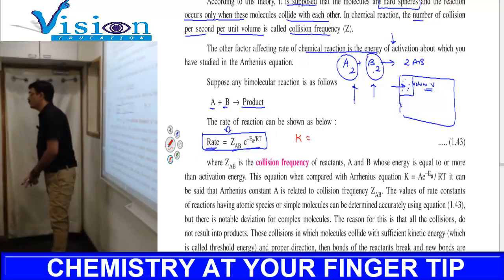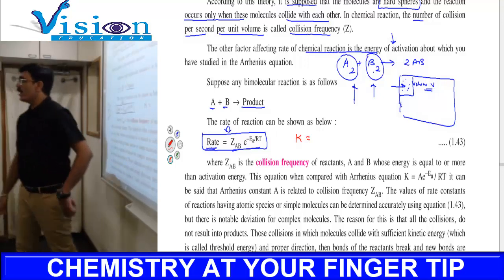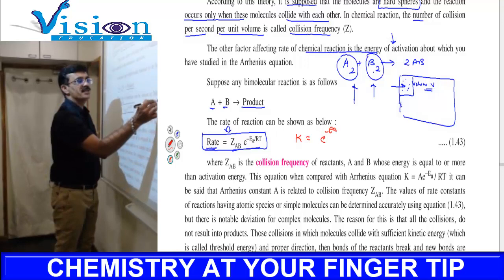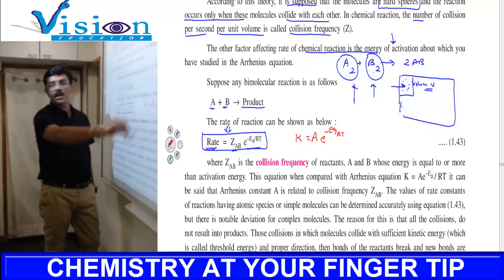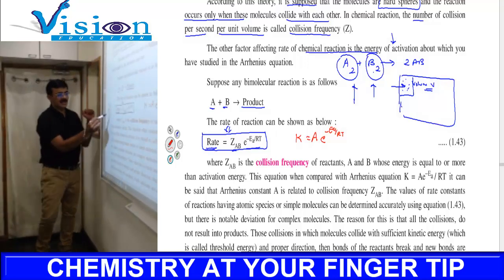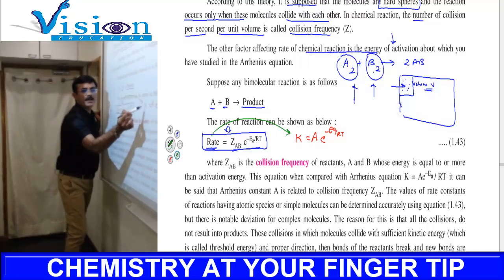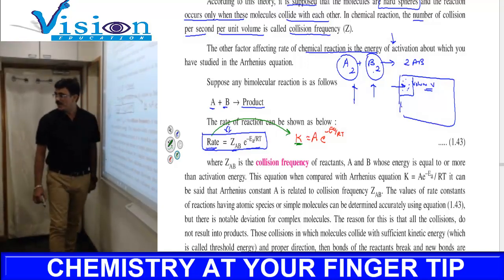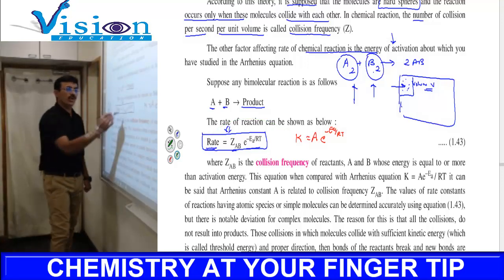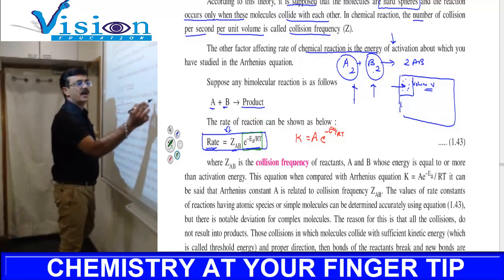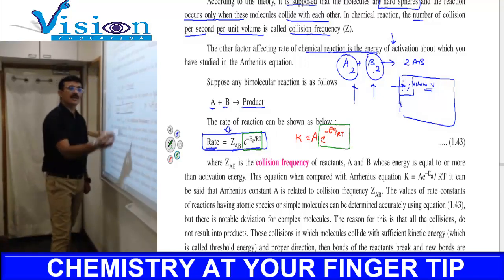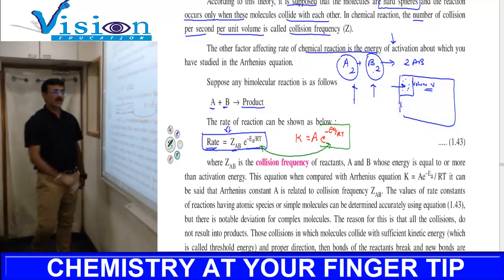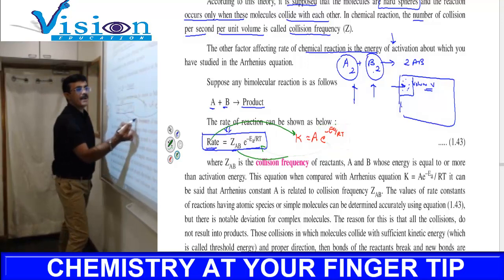We had seen an important expression: the Arrhenius relationship between rate constant and temperature, k = Ae^(-Ea/RT). If you observe closely, there is a relationship between rate and rate constant k. They are directly proportional. Both expressions have the common term e^(-Ea/RT).